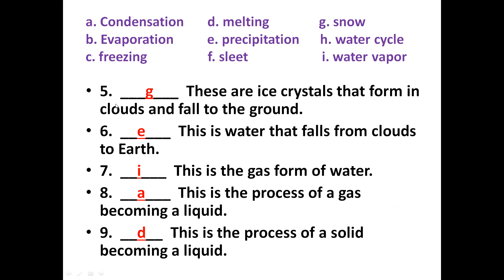Number five: these are ice crystals that form in clouds and fall to the ground. The answer for this is snow. Snow falls to the ground as ice crystals. The answer for five is G — snow.